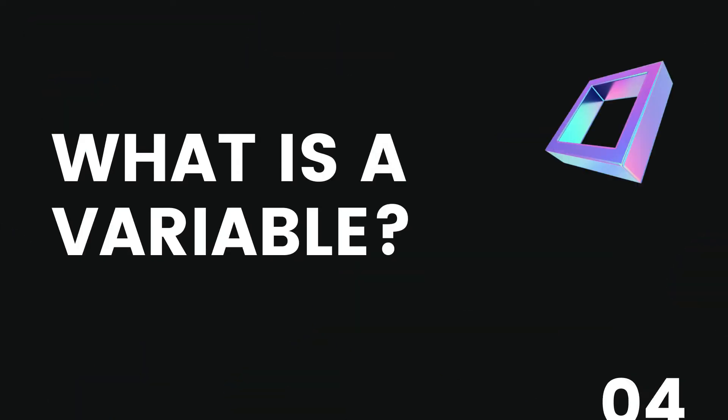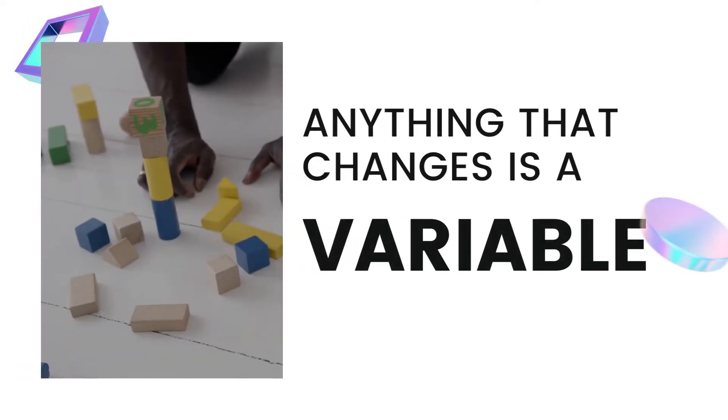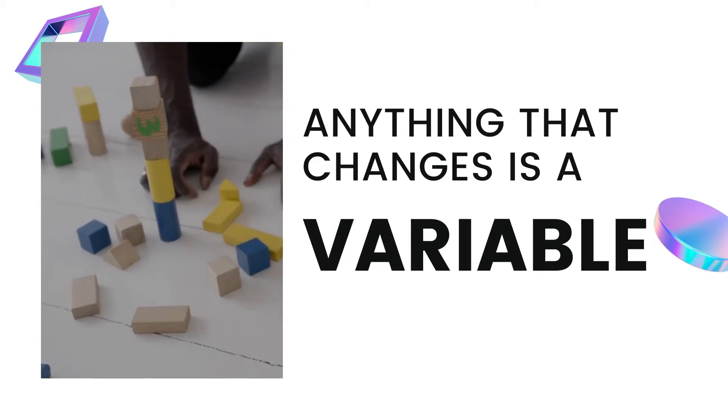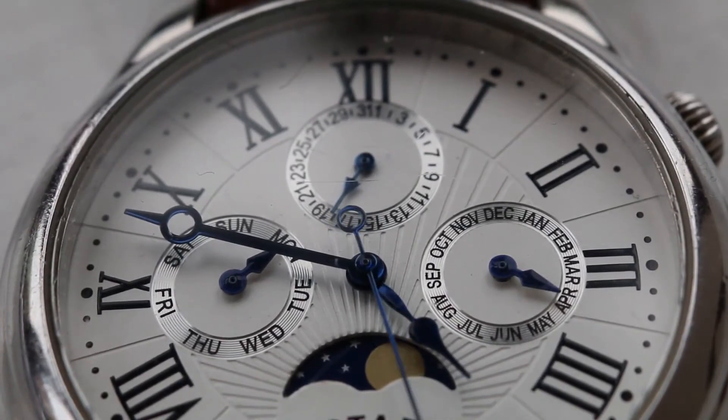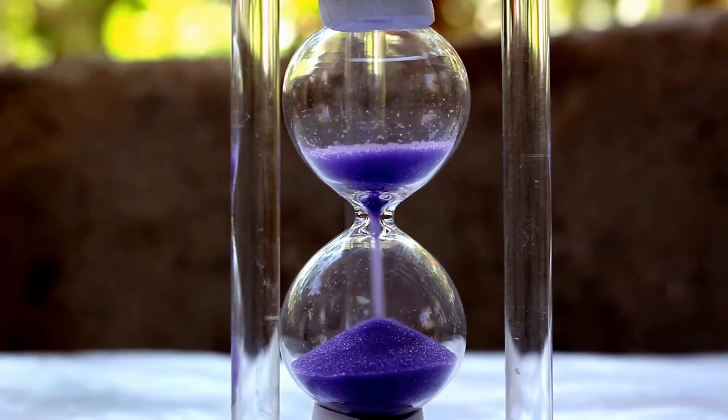What is a variable? Anything that changes is a variable. Yes, just like time, time changes constantly, never remains the same.